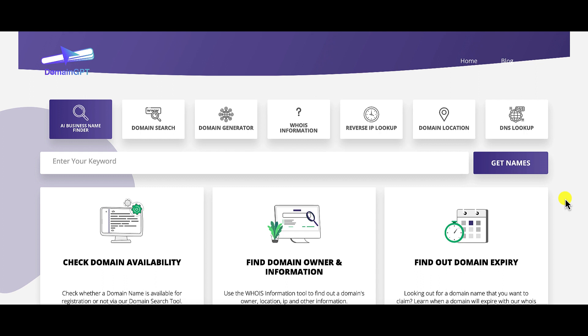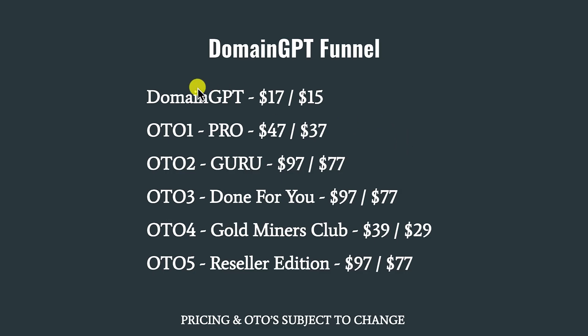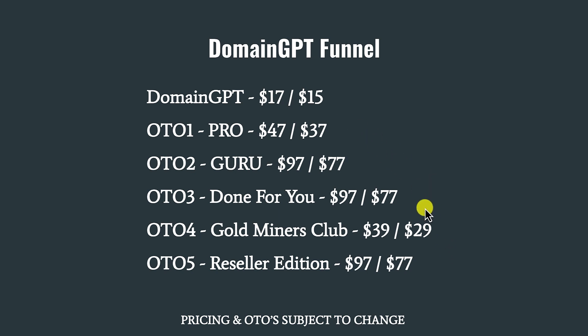Now you know the challenges of Domain GPT. Let's talk about the sales funnel. The front-end offer retails for $17. When you exit and close the sales page, they offer a $2 discount, dropping the price to $15. There are five upsells and five downsells. Pricing and OTOs are always subject to change.